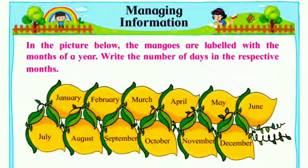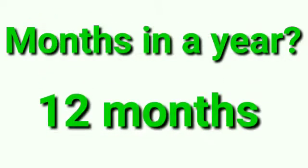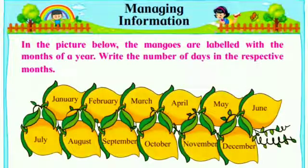Write the number of days in the respective months. So children, first tell me how many months do we have in a year? Very good, we have 12 months. So these mangoes have the names of the months.